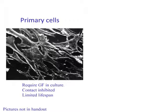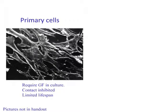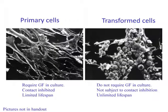Primary cells, or non-transformed cells, are cells that have been isolated directly from normal tissue. They can grow in cell culture for a limited amount of time, but this requires supplementation with various growth factors. Primary cells will also exhibit what is known as contact inhibition — they will stop growing once they have covered all of the surface of the tissue culture dish.